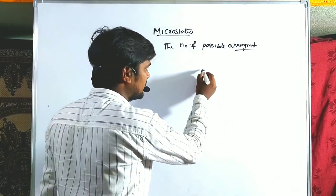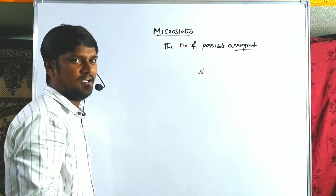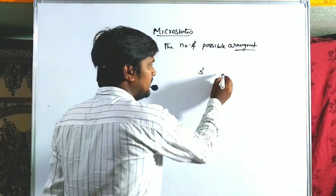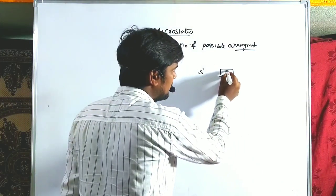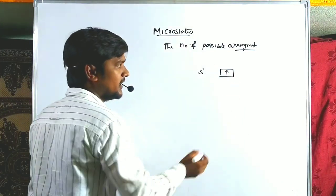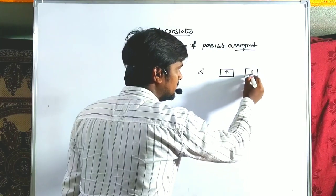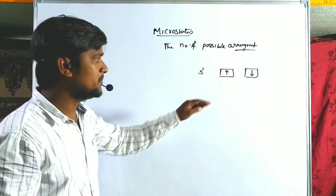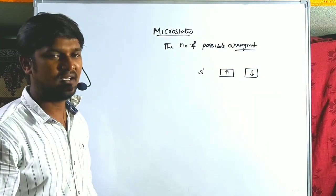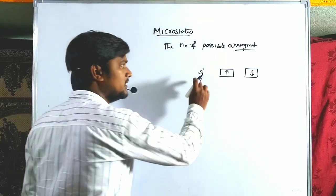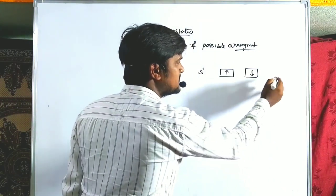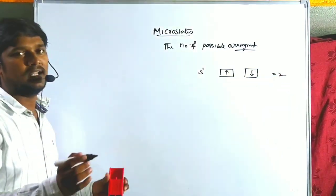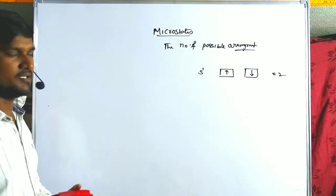Let us take one example: if S1 electron is there, S means only one orbital with one electron. That electron may be oriented spin-up or spin-down, so the spin quantum number is varied. The number of possible arrangements is equal to two, so this is called the microstates of the S1 configuration.